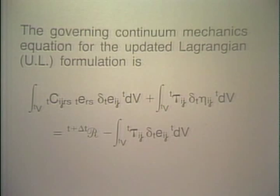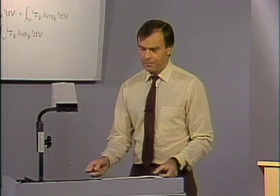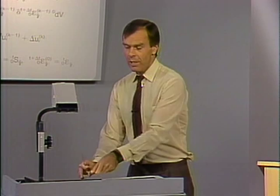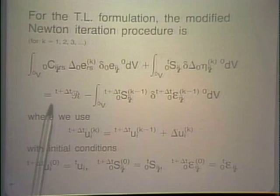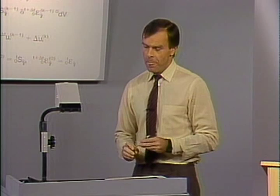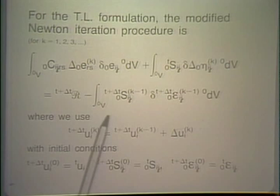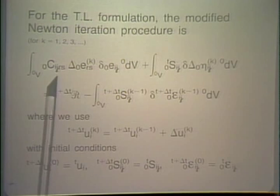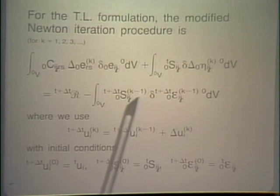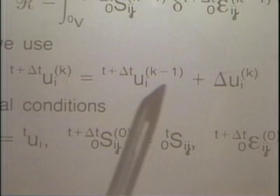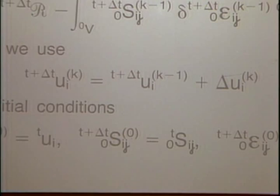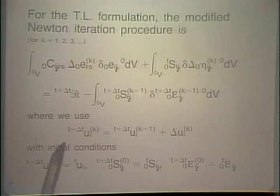For both the total Lagrangian and the updated Lagrangian formulations, we recognized that because of the linearization process involved, we need to iterate to obtain an accurate solution. The iterative equations used in the total Lagrangian formulation are summarized here, with the iteration count k on the left-hand side and k minus 1 on the right-hand side. We also have the equation where we update the displacements from iteration k minus 1 to k, along with the required initial conditions.